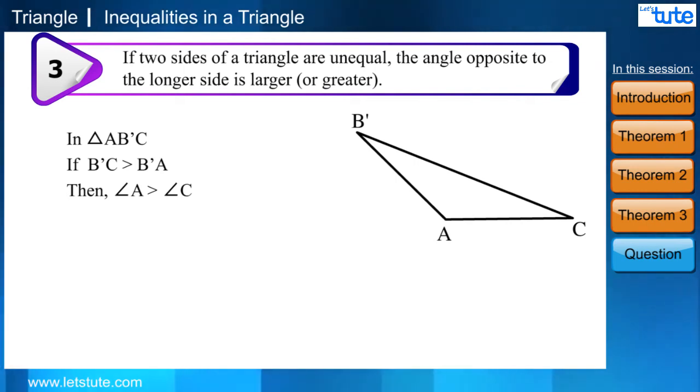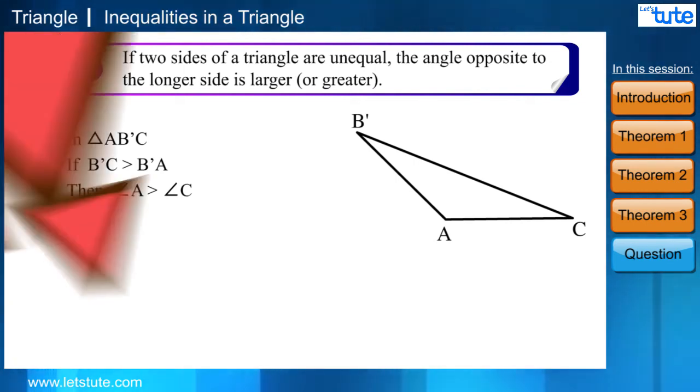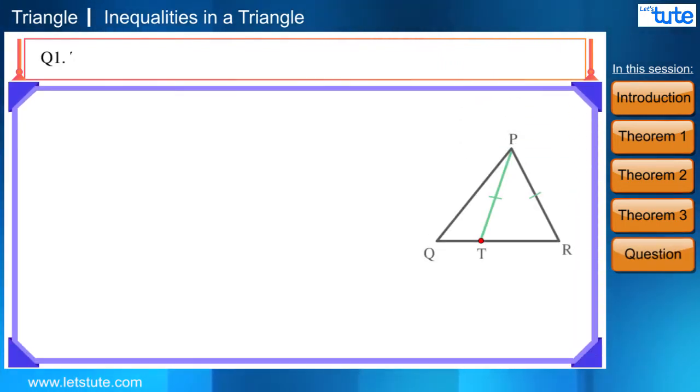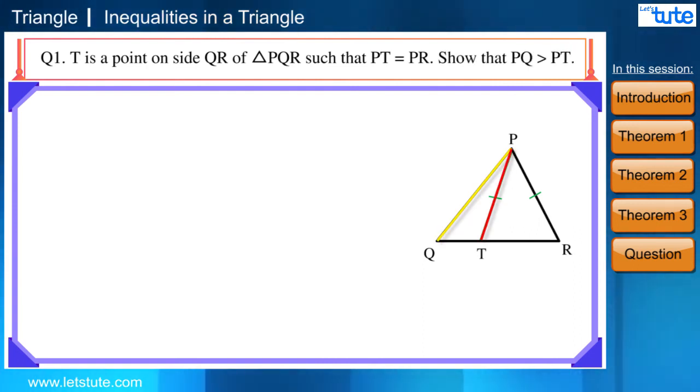Let us solve one example based on these theorems. Question 1: T is a point on side QR of triangle PQR such that PT is equal to PR. Show that PQ is greater than PT.